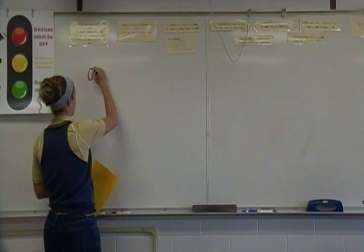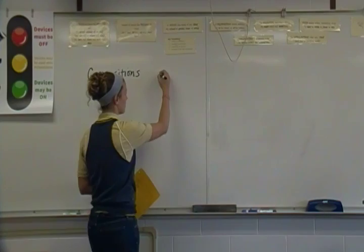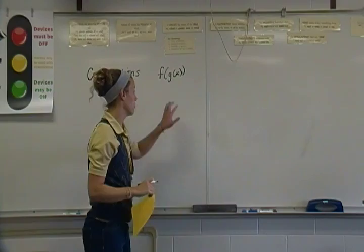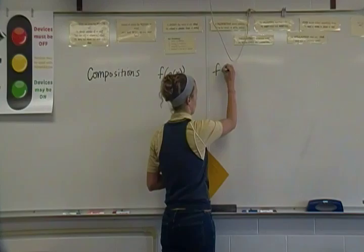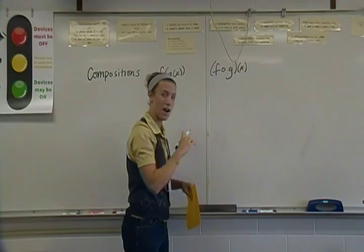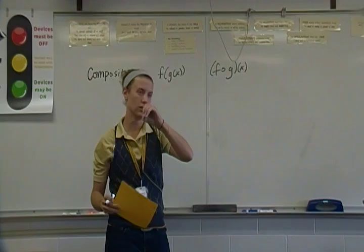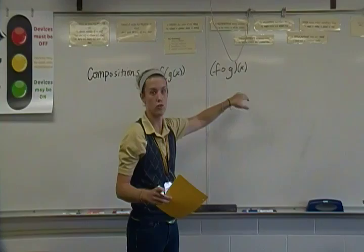Our notation for compositions of functions looks like either f of g of x. So we have g inside of our f function, or we see this other notation that looks like the word fog. This symbol right here kind of looks like a multiplication symbol, but it's actually a little open circle or maybe a degree that's kind of centered.